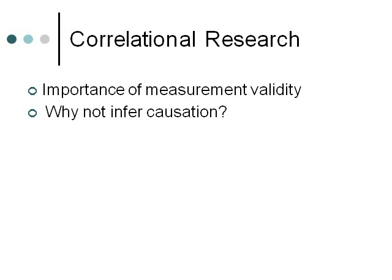We know we can't infer causation. Why not? Two main reasons. First, directionality: if there's a correlation between two variables A and B, we don't know if A caused B or B caused A. If we find a correlation between sun exposure and mood — where more sun exposure is associated with more positive mood — is it that being out in the sun makes people feel better, or is it that when people feel better, they're more likely to go outside? People who are depressed stay home in the dark. If we didn't assign people to go outside or not, we're just asking people how much they went outside and what their mood is like, and we don't know the direction of the causal relationship.